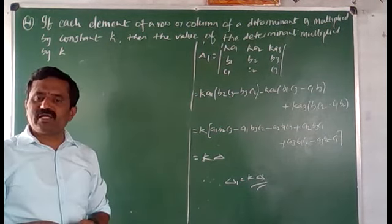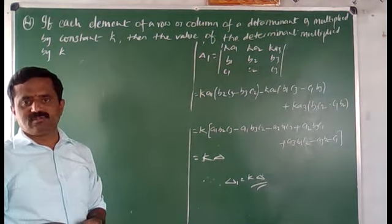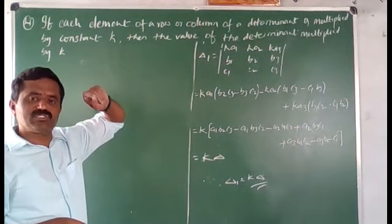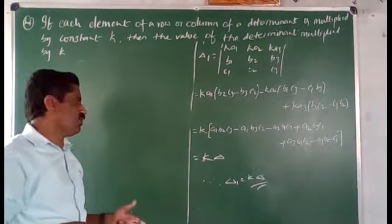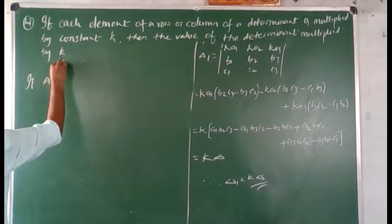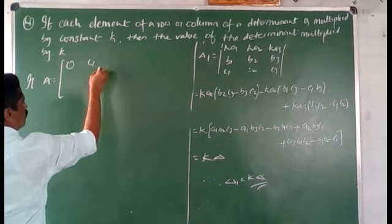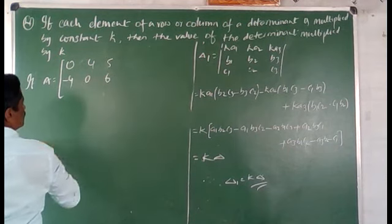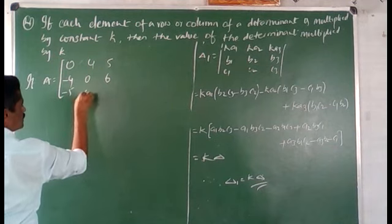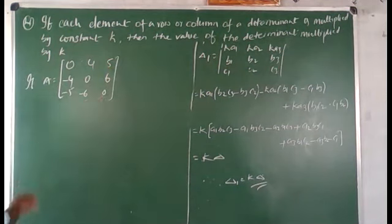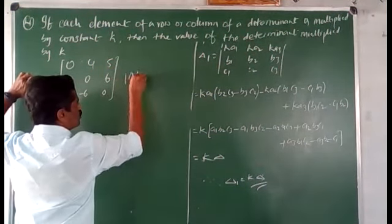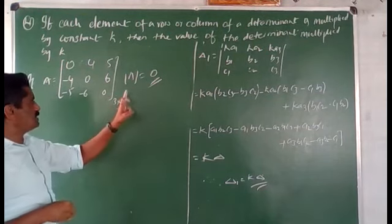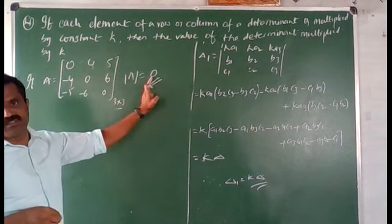Next: the determinant of a skew symmetric matrix of odd order gives 0. For example, if A is the matrix with rows [0, 4, 5], [−4, 0, 6], [−5, −6, 0], it is a skew symmetric matrix of order 3, and therefore determinant of A equals 0.